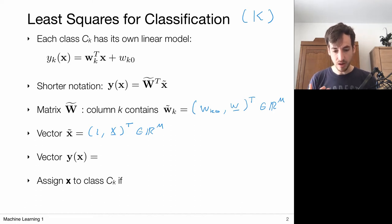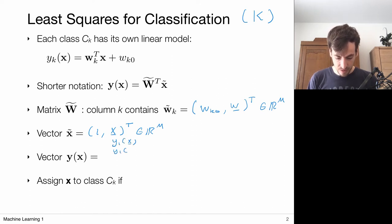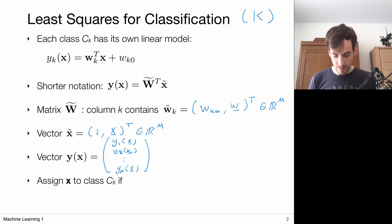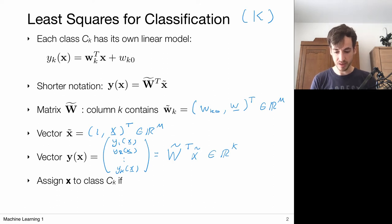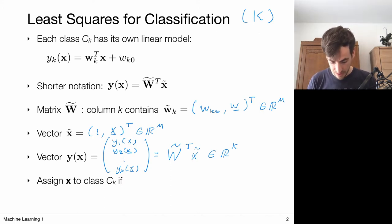My vector y(x) is all these discriminant function evaluations stacked on top of each other, with K such discriminant functions. This matrix-vector multiplication gives me a vector of length K — one prediction for each class. My strategy is to assign x to class c_k if the k-th model gave the largest value in the discriminant function.